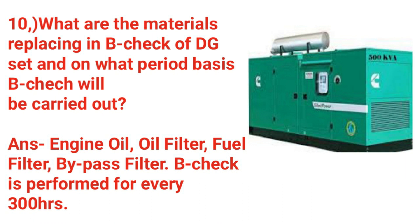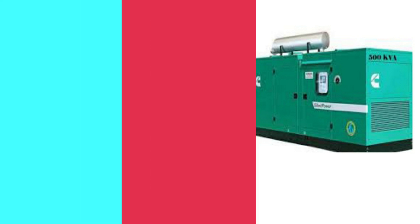What are the materials replaced in a DG set B-check, and what maintenance is carried out? Engine oil, oil filters, fuel filters, and bypass filters are replaced. The B-check is performed every 300 hours.